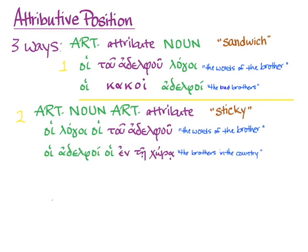Same with the prepositional phrase: hoi adelphoi hoi en te hora, 'the brothers in the country.' Which brothers are we talking about? The ones in the country. That second article sticks the attribute to the noun. And again, we can do this with adjectives as well: hoi adelphoi hoi kakoi — those are 'the bad brothers.'